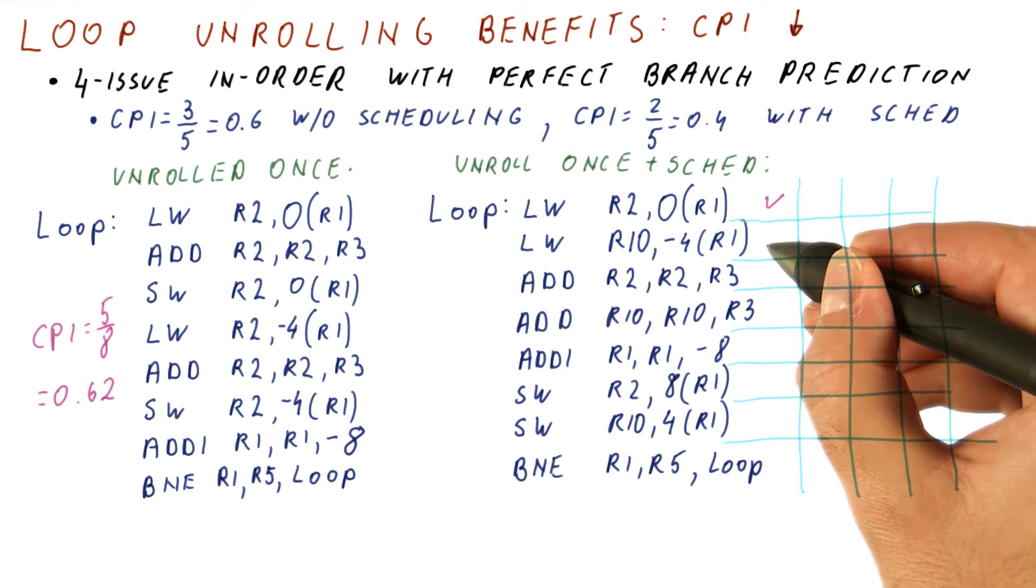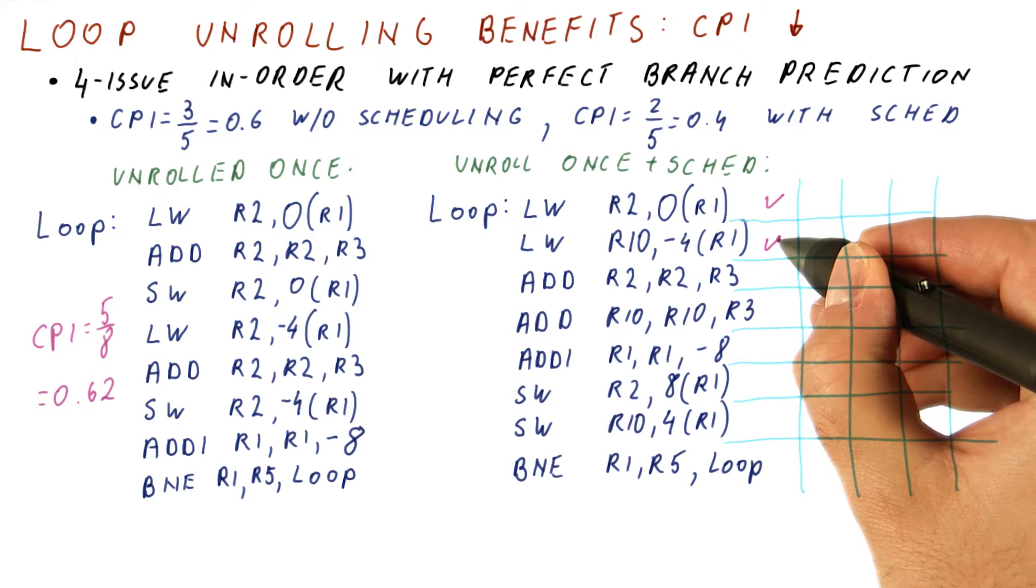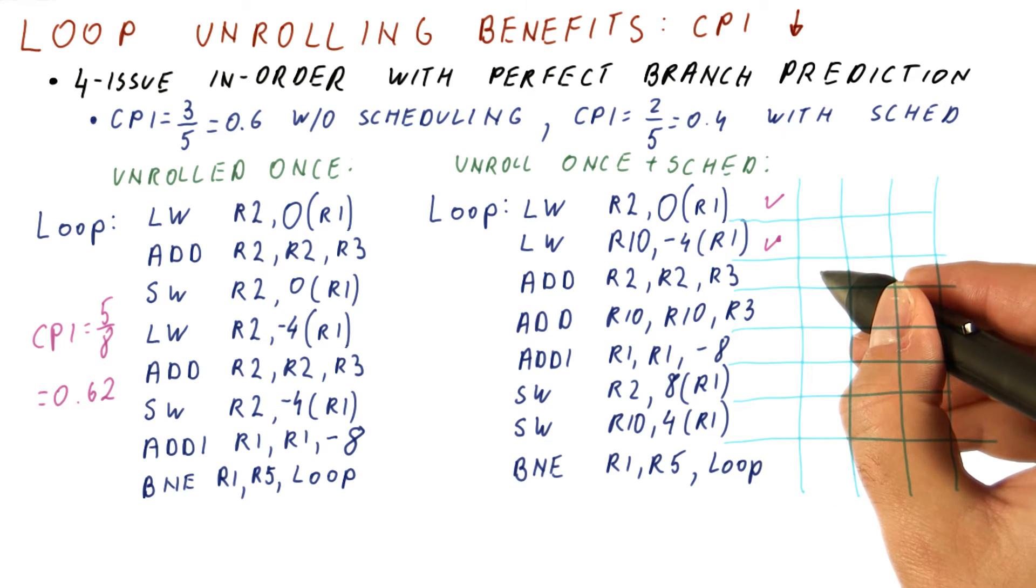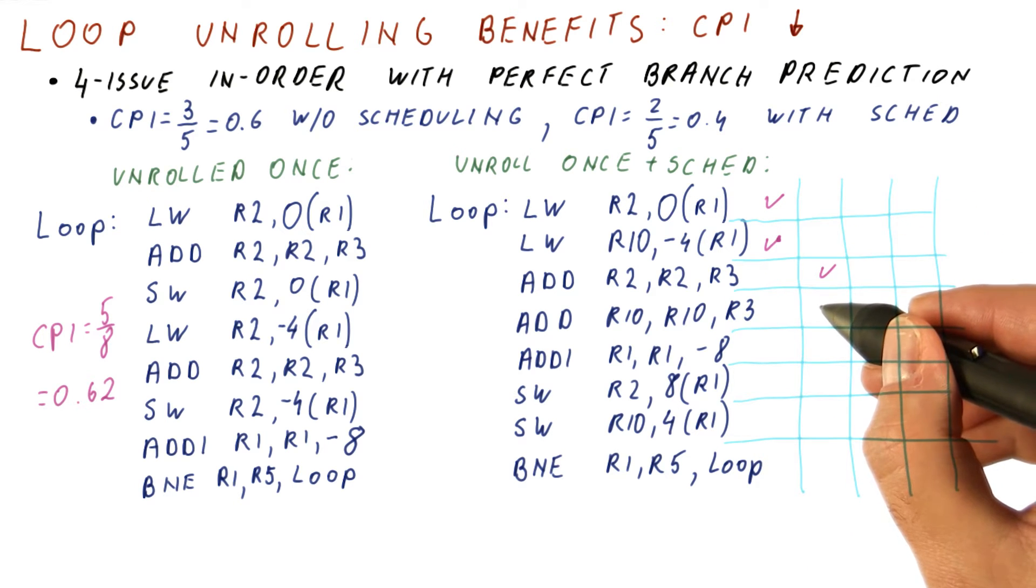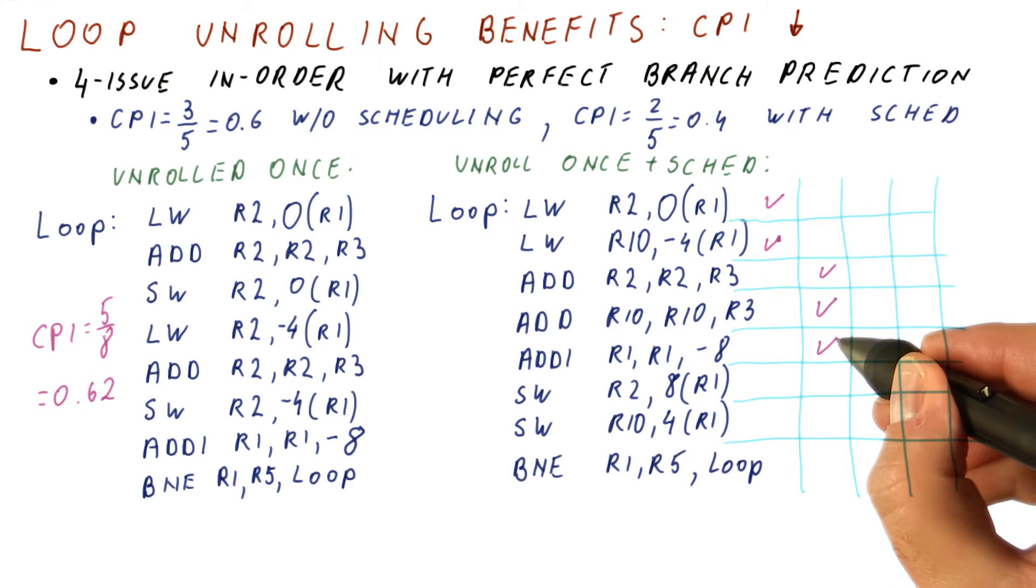In the first cycle, we will be doing these two loads that can now proceed in parallel. The add here, however, cannot proceed in that same cycle, because it needs the result of this load. However, this add, and the next one, and this one, can proceed in the second cycle.